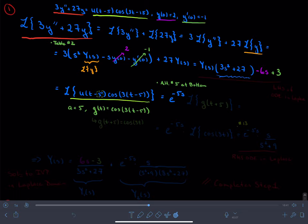So that e to the negative 5 s is the Laplace representation of the fact that there is a time delay floating around.